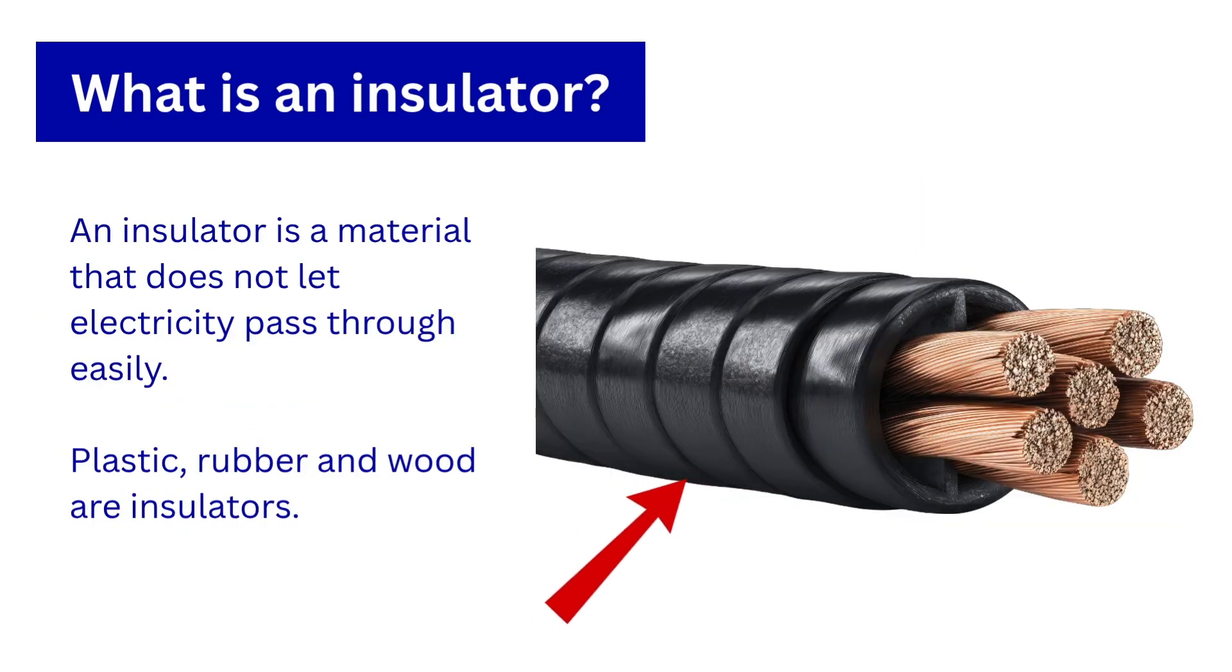What is an insulator? An insulator is a material that does not let electricity pass through easily. Plastic, rubber, and wood are insulators.